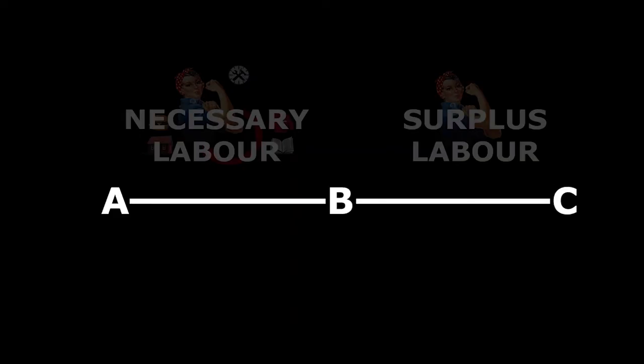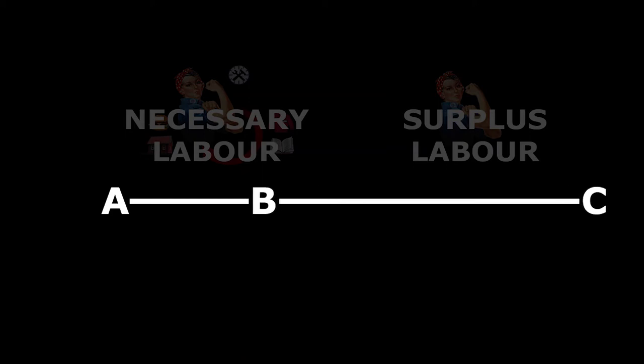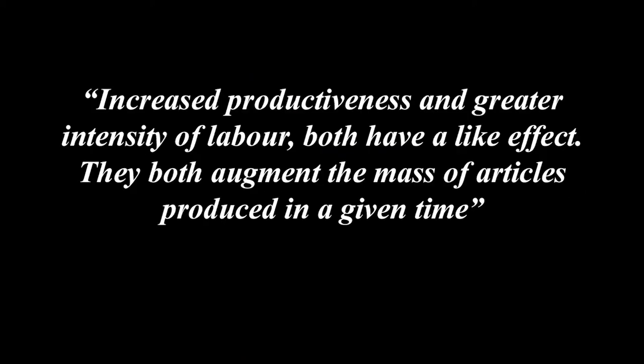Obviously, they aren't just limited to using one of these at a time and so many varying combinations are possible, of which Marx now details some. Increased productiveness and greater intensity of labour both have a like effect — they both augment the mass of articles produced in a given time.